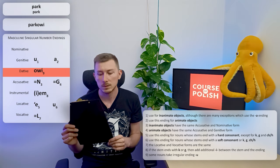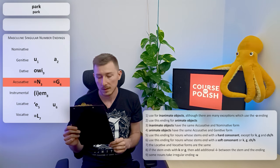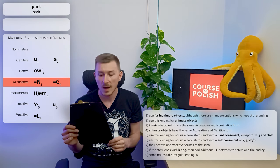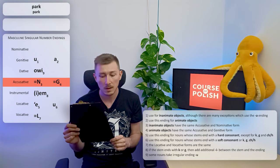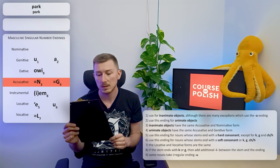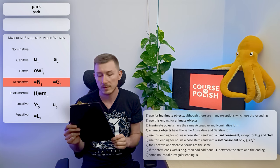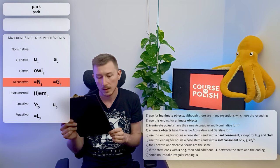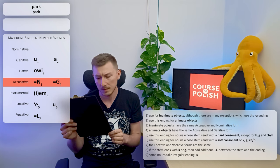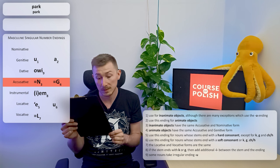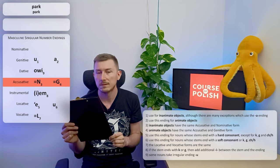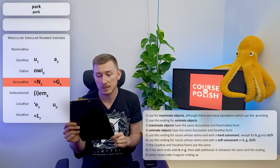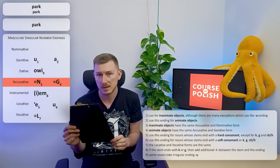Let's move on to accusative case. Here we have two options. Either we have to use the same form as in nominative case or the same form as in genitive case. Let's read the rule number three: inanimate objects have the same accusative and nominative form. We already know that PARK is inanimate, so we have to use the form from nominative case. So it's just PARK.